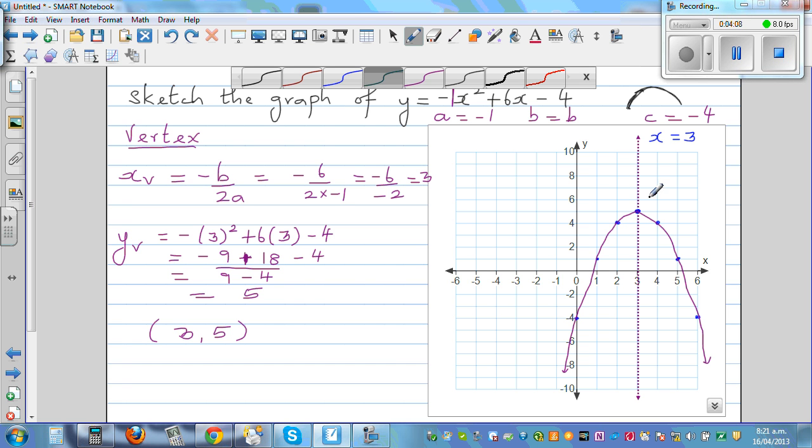Let's confirm these points. This is 3 comma 5. Let's confirm this point, which is 5 comma 1, and let's confirm this point, which is 1 comma 1. Let's confirm this on the calculator.